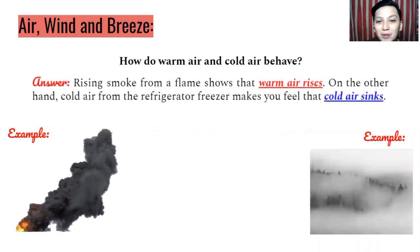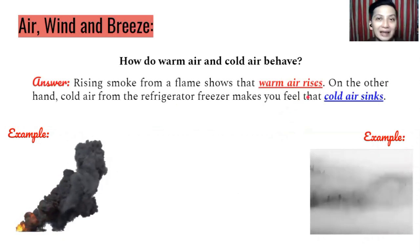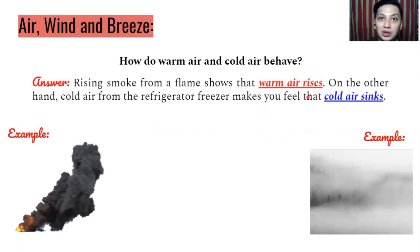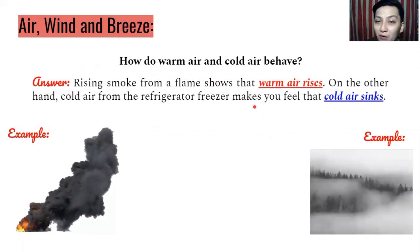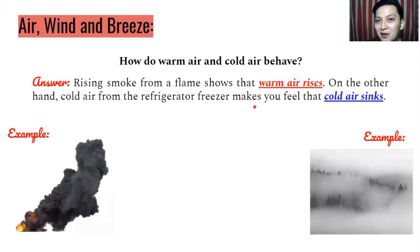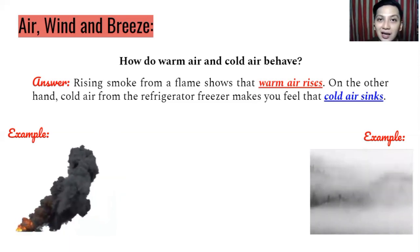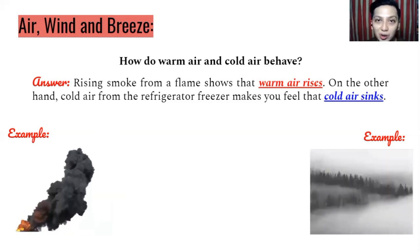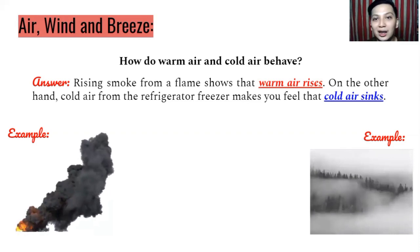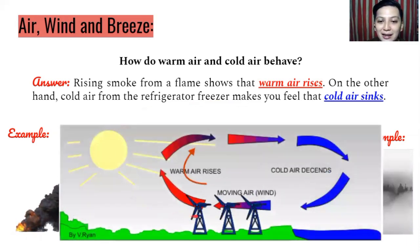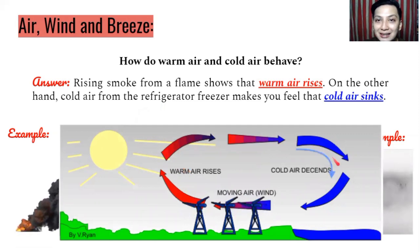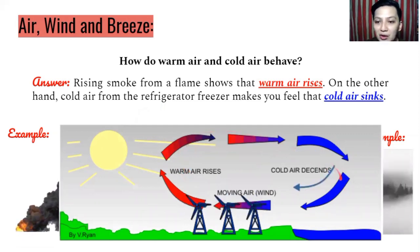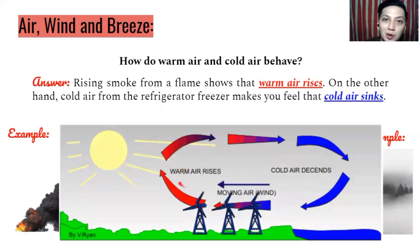So the answer is: rising smoke from a flame shows that warm air rises — all air that is being warmed goes upward. And on the other hand, cold air from the refrigerator or freezer makes you feel that cold air sinks. So fog goes downward because cold air sinks, while warm air rises. As you can see in this diagram, warm air rises and when it is cold it descends, creating a circular motion or cycle.